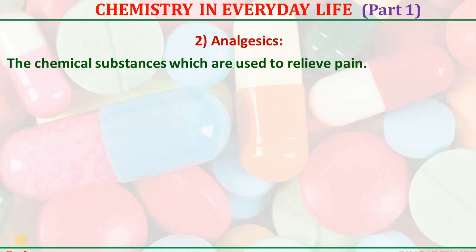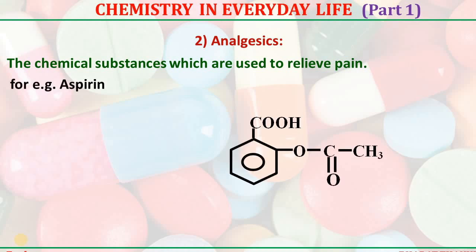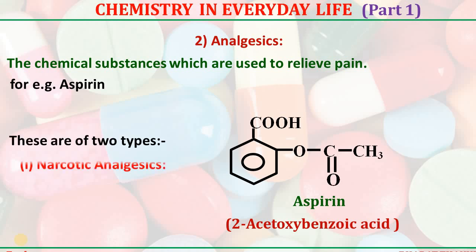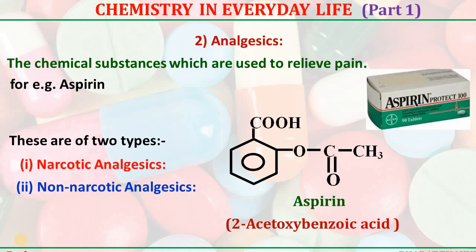Analgesics — the chemical substances which are used to relieve pain are called analgesics. For example, aspirin, with the chemical name 2-acetoxybenzoic acid. There are two types of analgesics: narcotic and non-narcotic analgesics.